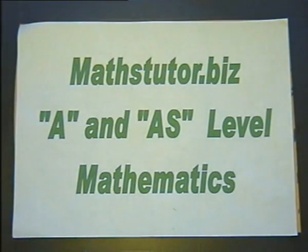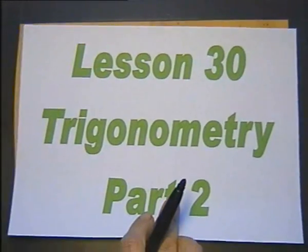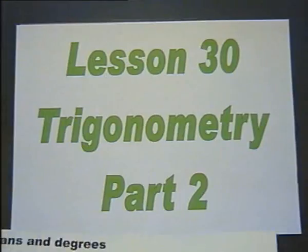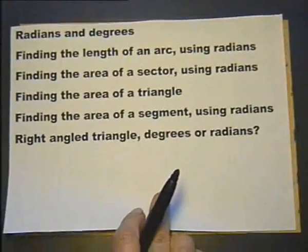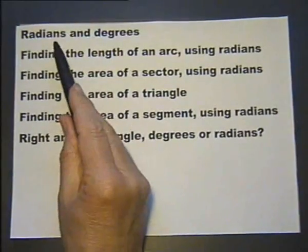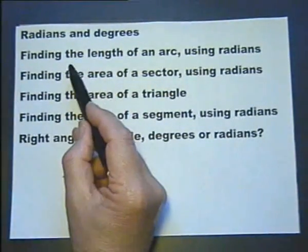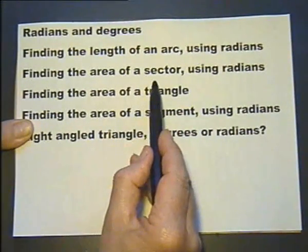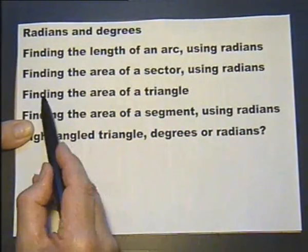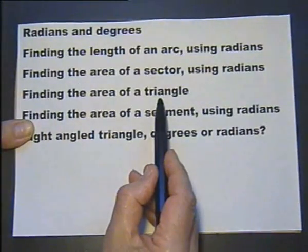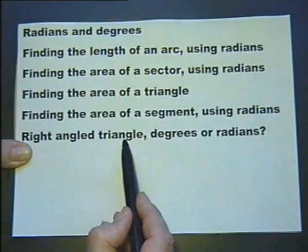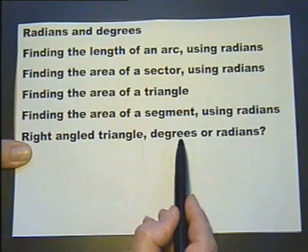A and IS level mathematics, Lesson 30, Trigonometry part 2. We're going to be looking at radians and degrees, finding the length of an arc using radians, finding the area of a sector using radians, finding the area of a triangle, finding the area of a segment using radians, and the right angle triangle, degrees or radians.